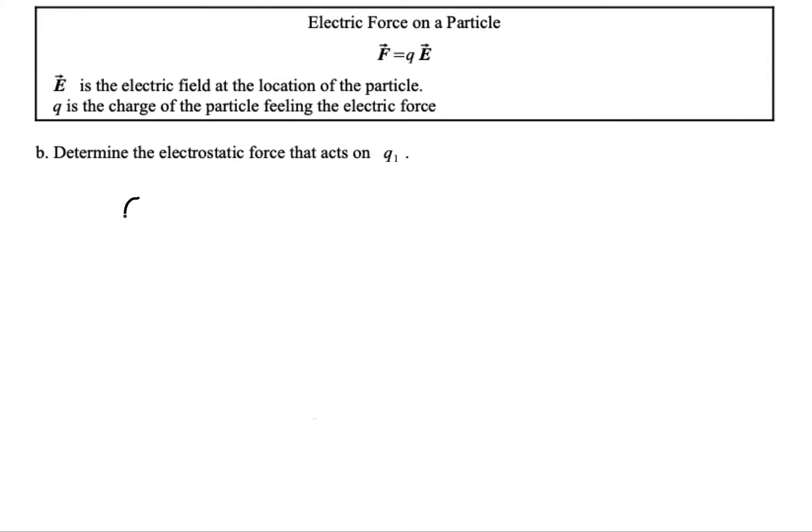In a previous video I showed how to calculate the electric field at a point between two negative charges. This is the point P. The charge on the left was called q2 and it had a magnitude of four microcoulombs.